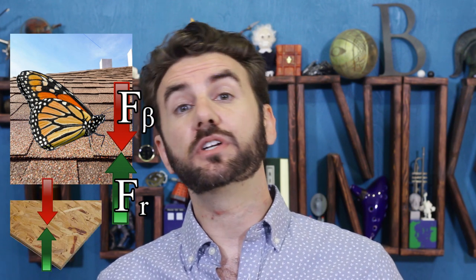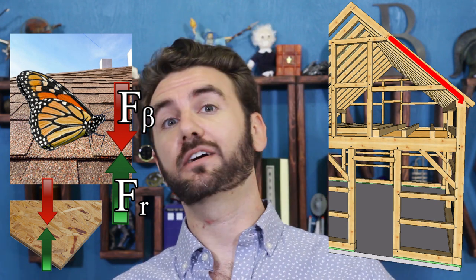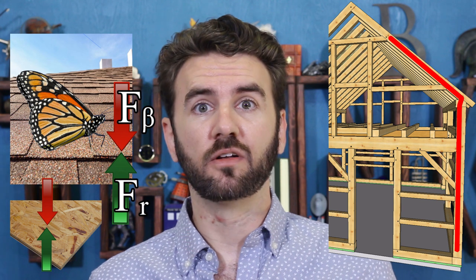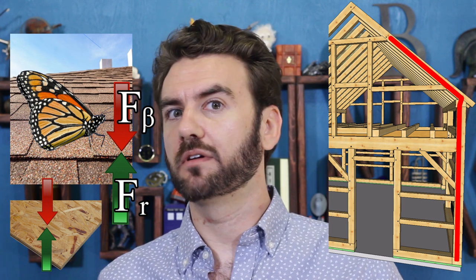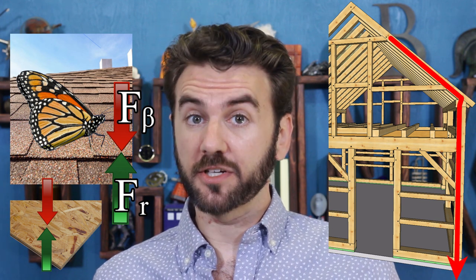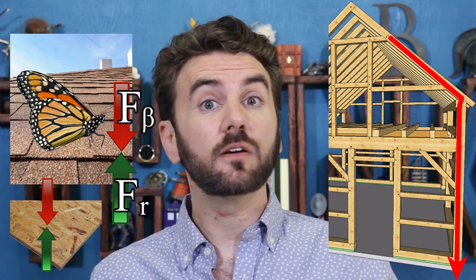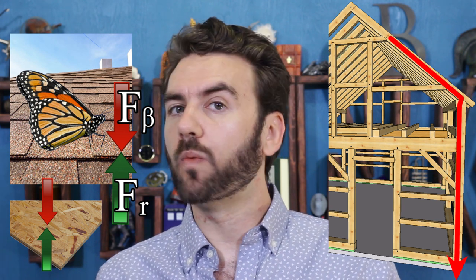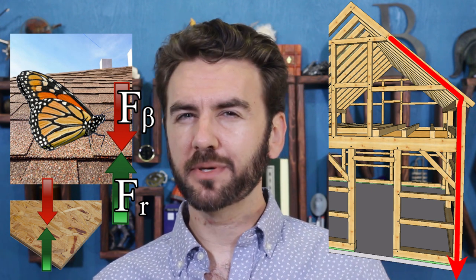That shingle is now pushing down with an extra butterfly's worth of force and has to be pushed upward by the plywood beneath it. That plywood is pushing down on a roof beam, which is pushing down on a framing beam, which is pushing down on a load-bearing wall, which is pushing down on a floor joist, which is pushing down on a concrete slab, which is pushing down on the earth. The butterfly is ultimately being supported by the earth itself.